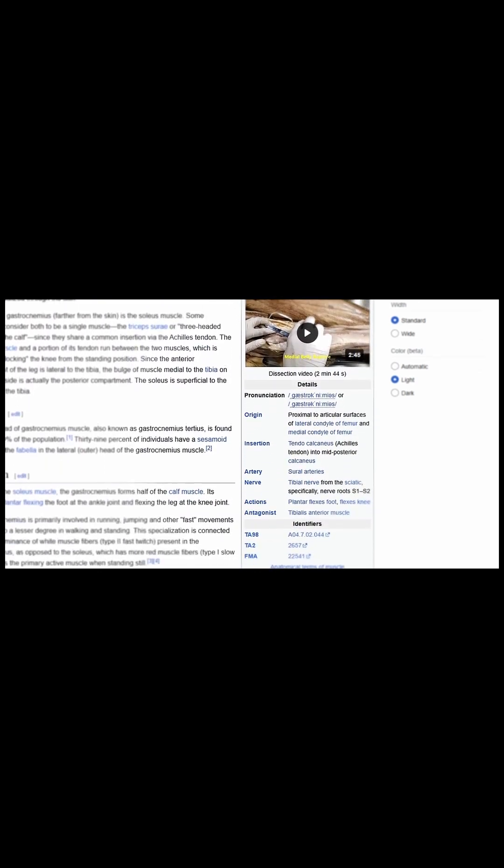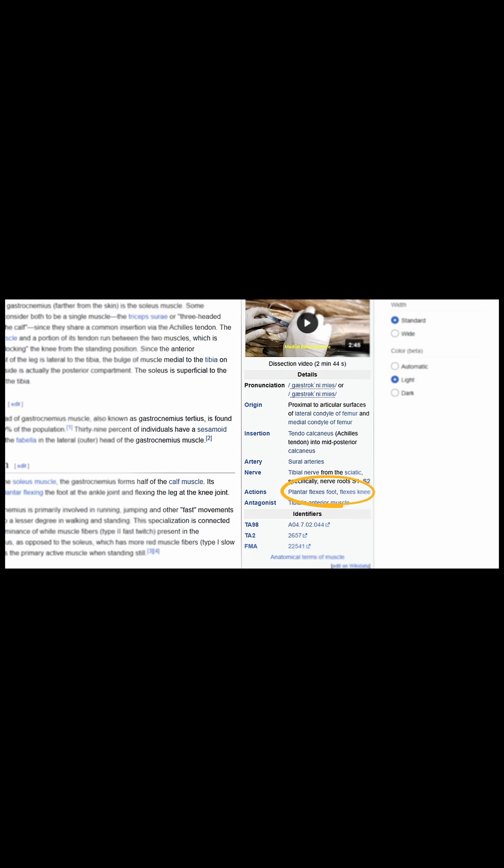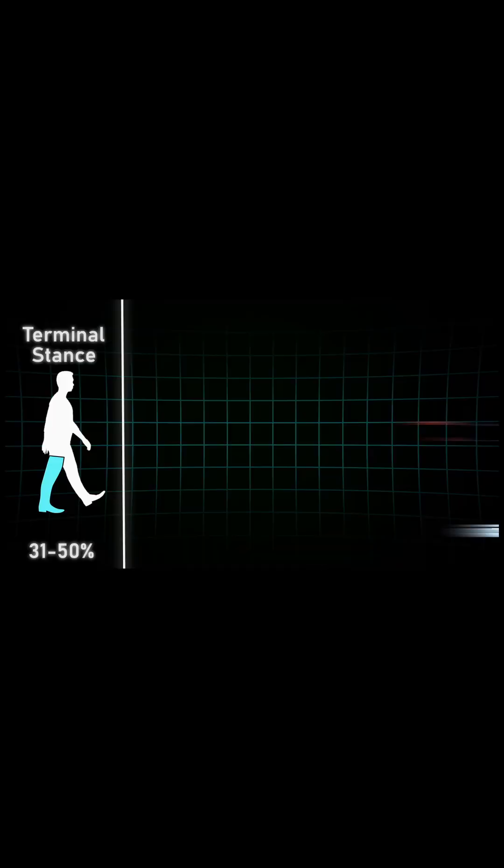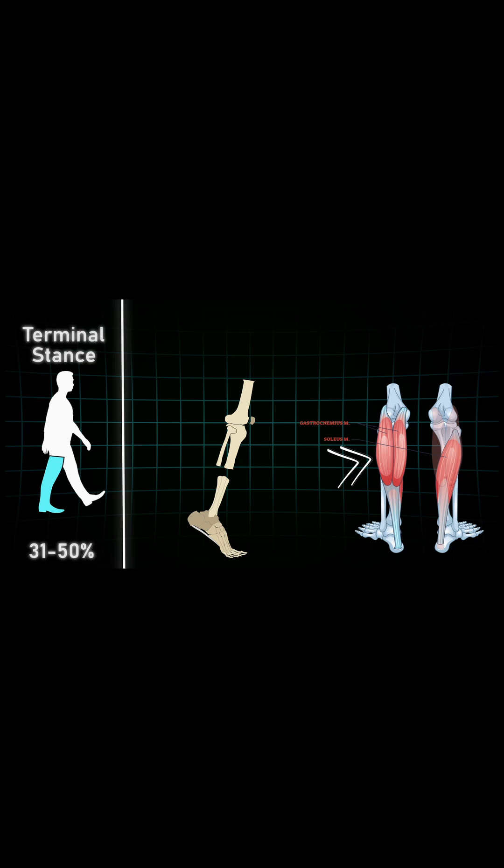It says plantarflexion and knee flexion. This is the exact moment where this muscle really shines. The gastrocnemius is the main player now, preventing the knee from getting hyperextended.